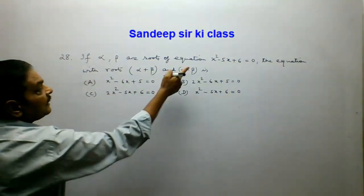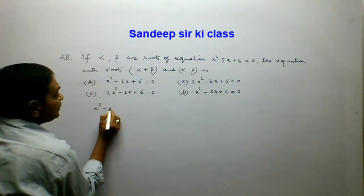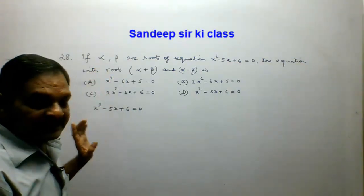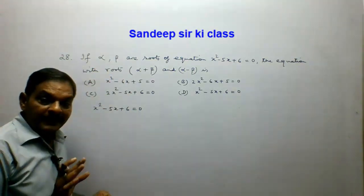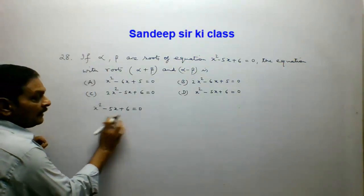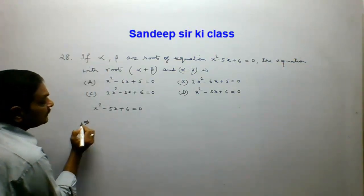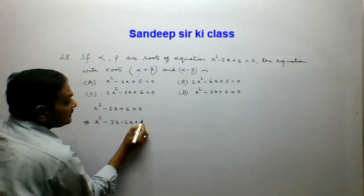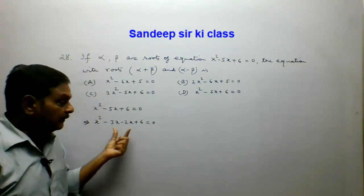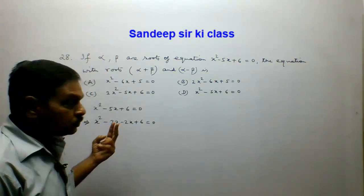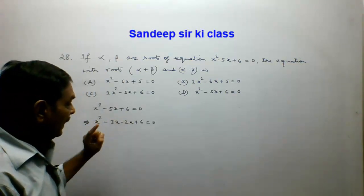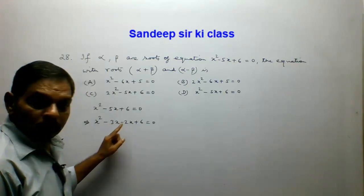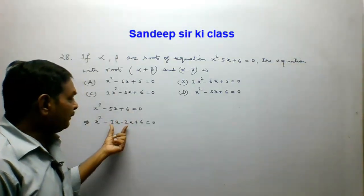The given equation is x squared minus 5x plus 6 equals 0, and alpha, beta are the roots. We factorize this polynomial: x squared minus 3x minus 2x plus 6 equals 0. We split the middle term so that the product of the two numbers is 6 and the sum is 5 — selecting 3 and 2, since 3×2=6 and 3+2=5.